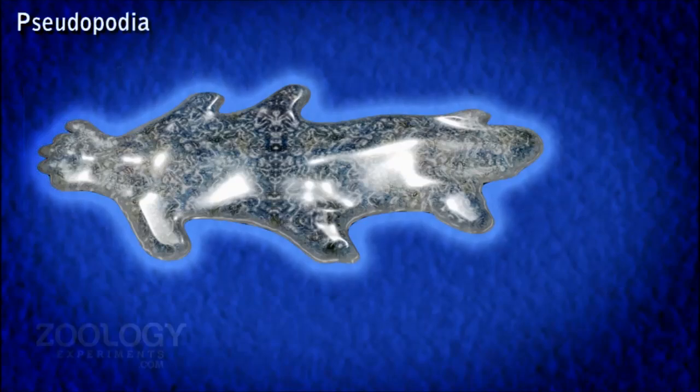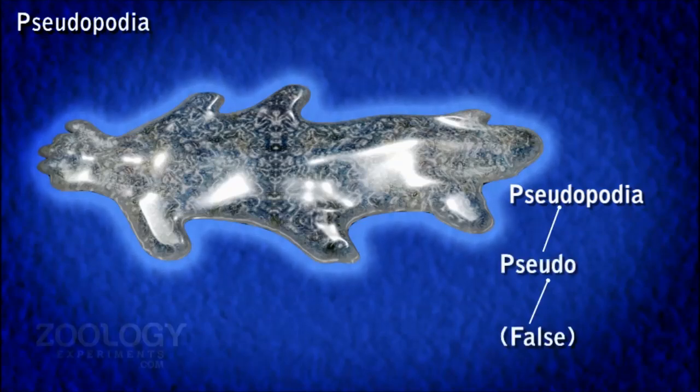Pseudopodia is derived from two words: pseudo means false and podium means foot. These are irregular blunt processes of the cell body. They are also called false feet.